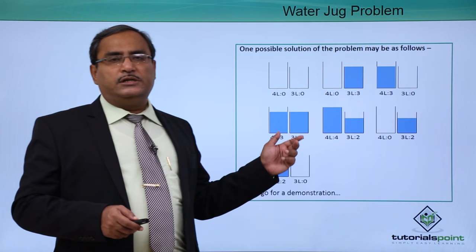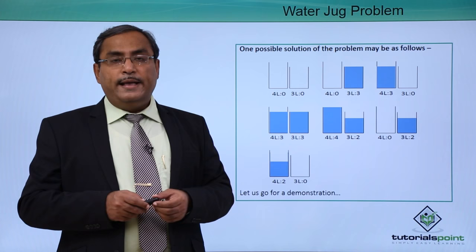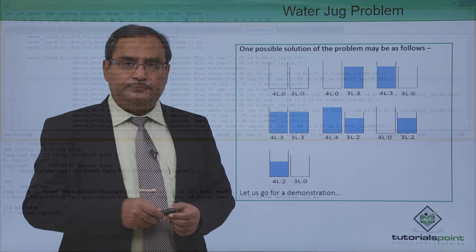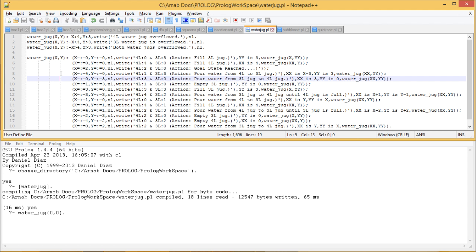Using diagrams and pictures we have demonstrated the solution, but now let's look at how to implement the same in Prolog. Here is the implementation of the Water Jug Problem in Prolog.